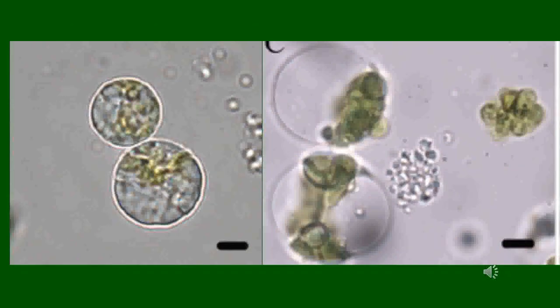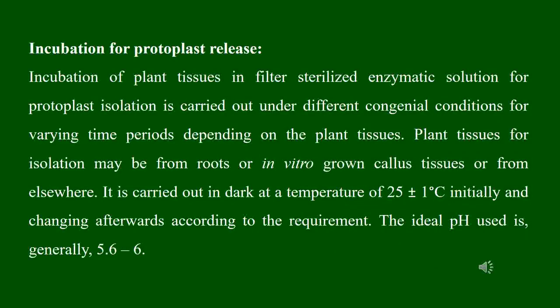Plant tissues dipped in enzymatic solution for protoplast isolation are generally kept for a longer time — a few hours. The entire process is carried out in the dark at a temperature of around 25 degrees centigrade and an ideal pH of 5.6 to 6.